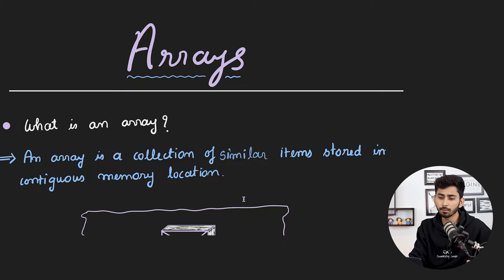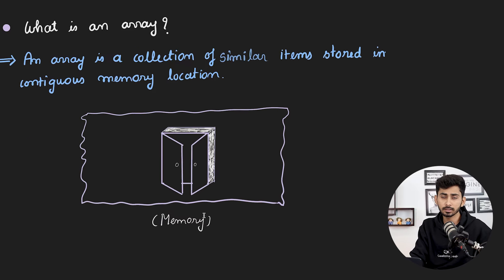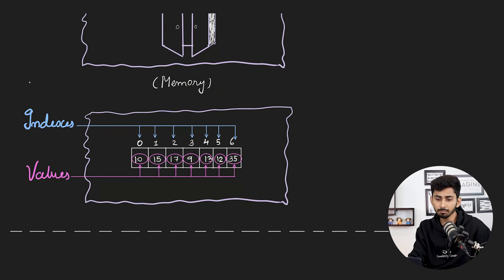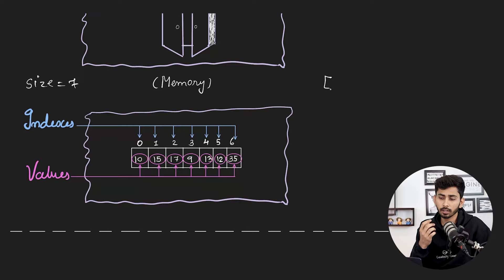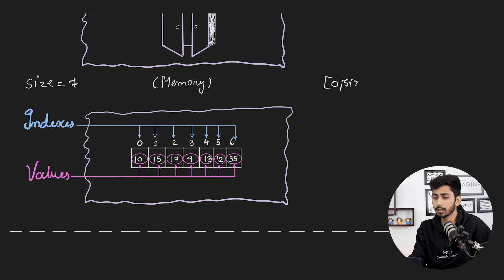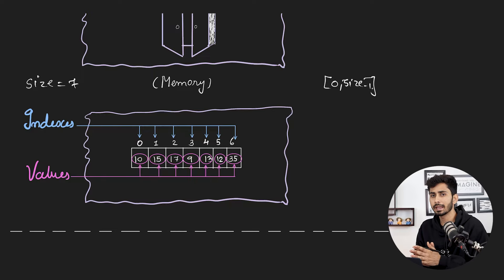Here I have taken an example. You can see the size of this array is equal to seven. I have taken an array of size seven, and the index starts from zero and goes till six. Generally the range of the indexes is from zero till size minus one. You can think of an array as a mapping between values and indices.